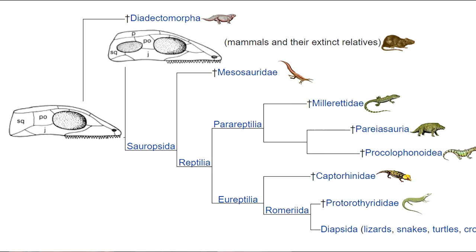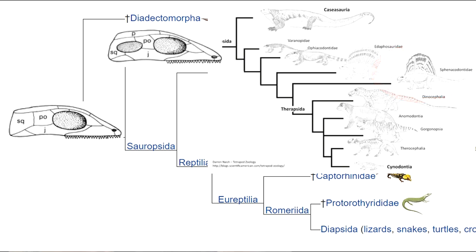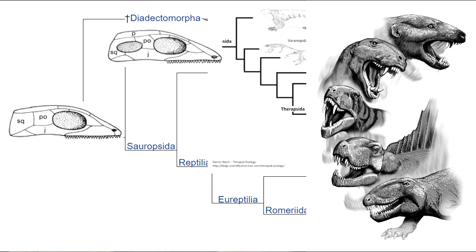Amniotes with a single temporal fenestra form a clade called synapsids. Pelycosaurs, like Dimetrodon, are the most primitive synapsids. Dimetrodon is representative of the Permian period, but the earliest pelycosaurs appeared in the late Carboniferous — more than 50 million years before the first dinosaurs, and 100 million years before the first complete or true mammals. And there are quite a few intermediate fossils marking every stage of that transition.